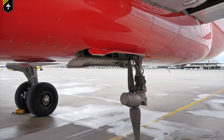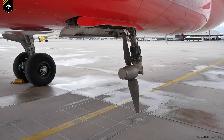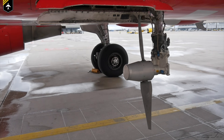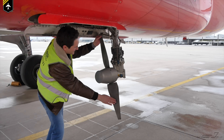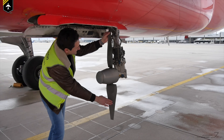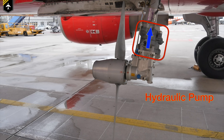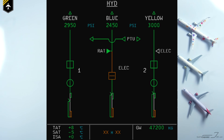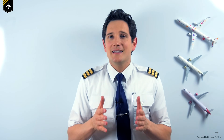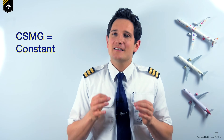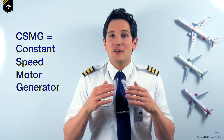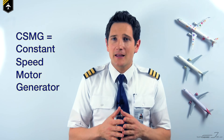The RAT immediately drops out of the belly of the aircraft. As you can see, it looks like a little windmill — and that's more or less what it is. The blades immediately start spinning due to the airflow and power a hydraulic pump, which sits in the RAT to pressurize the blue hydraulic system. Because the blue hydraulic system is normally powered by an electric pump, but due to the emergency electric configuration, the electric pump has now become inoperative. Some of the created hydraulic pressure is then guided into the CSMG — the constant speed motor generator — which then provides enough power to feed the electrical system.